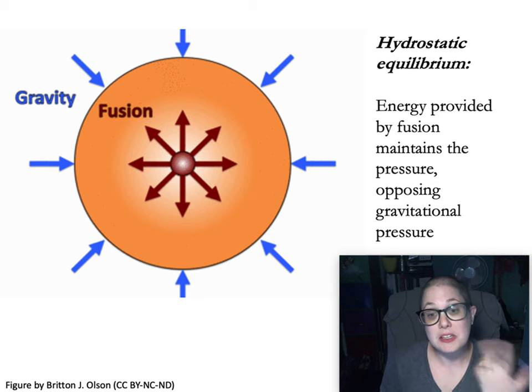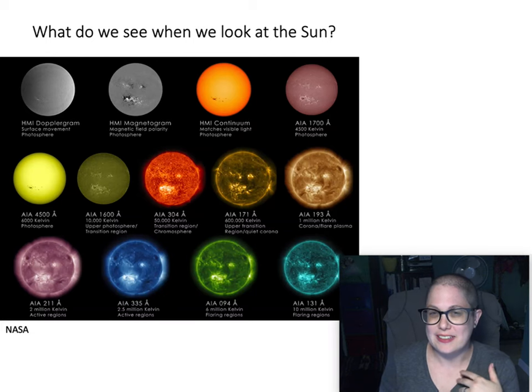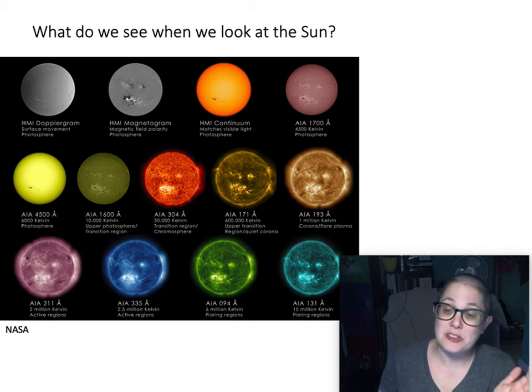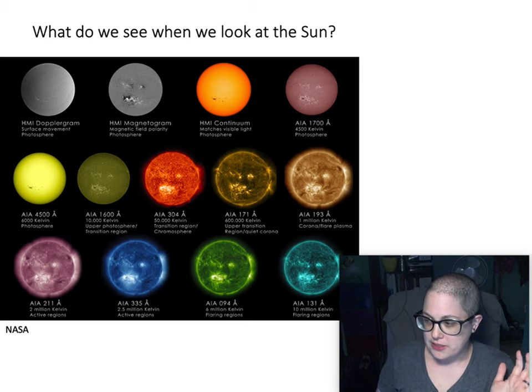When we look at our sun in particular, going back to the light lesson, I think I showed several different views of the sun seen with different types of light. Here's a few more of these. This is from the Solar Dynamics Observatory, which has been, oh wow, has it been 10 years?